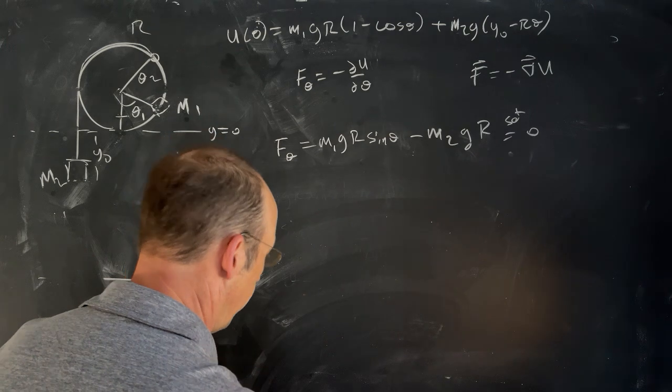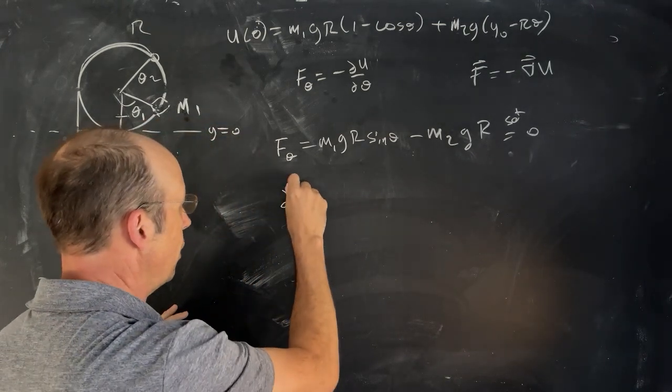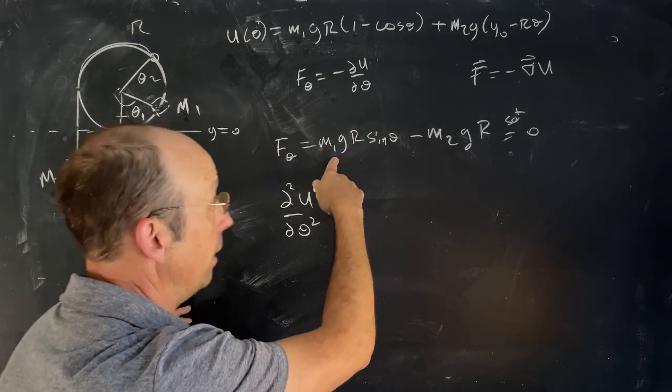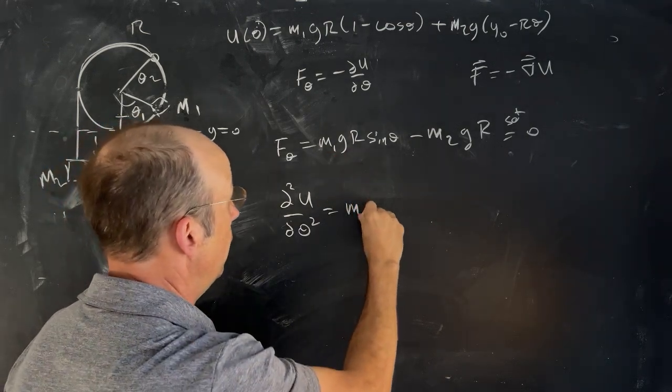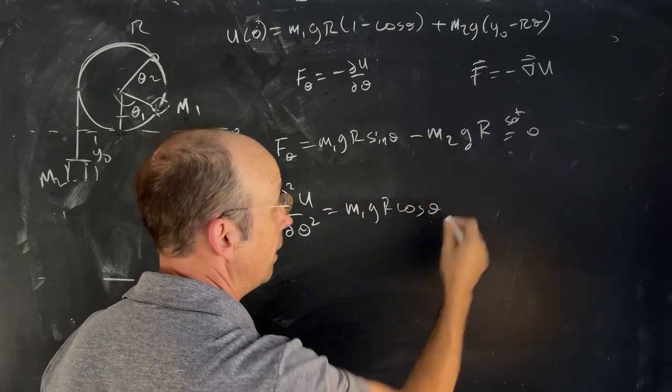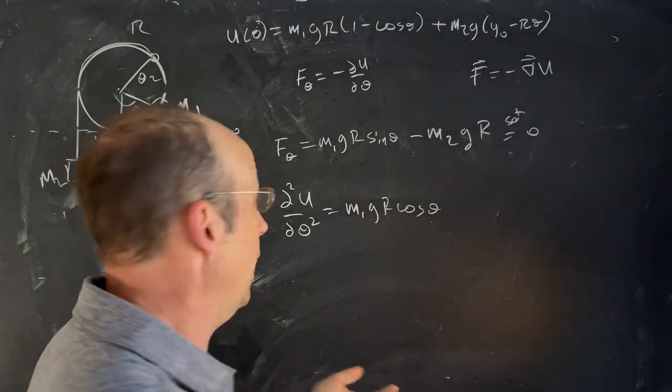I can erase that. So let's take the second derivative. The second derivative of U with respect to theta is going to be the derivative of this with respect to theta. So right here, I get M1 G R cosine theta, and then that's zero. And we want to say, is it positive or negative?